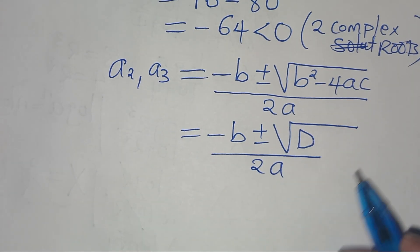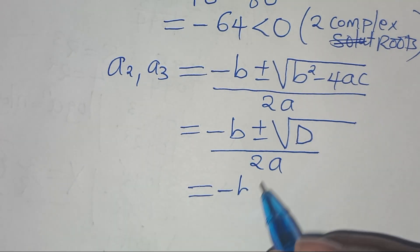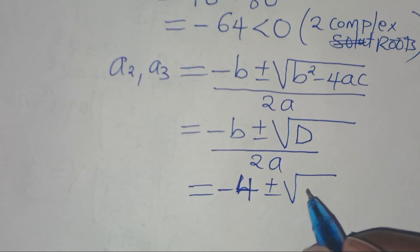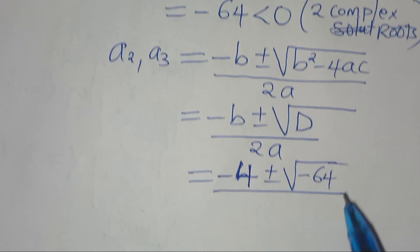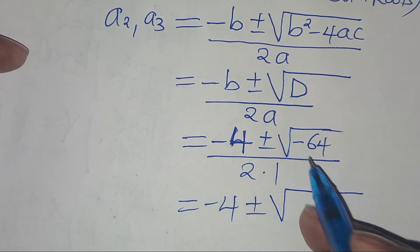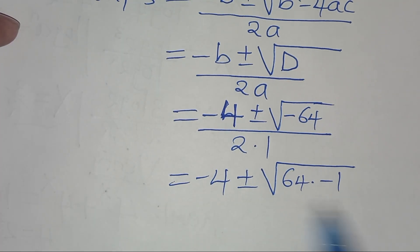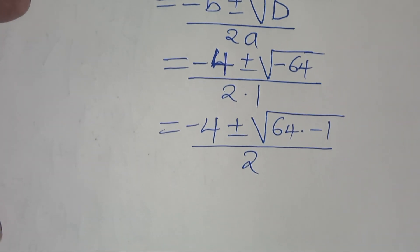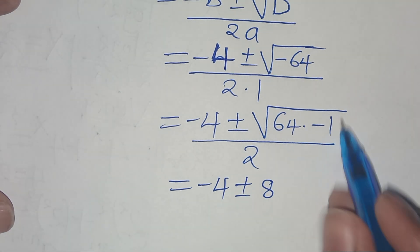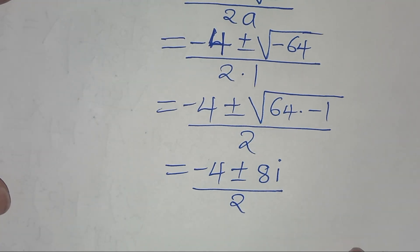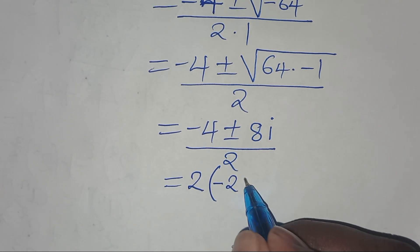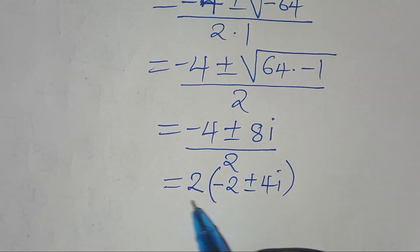Let's substitute the values of a, b, and c. We have minus b, where b is 4, so this is minus 4, plus or minus the square root of the discriminant, which is minus 64, divided by 2 times 1. We can express the square root of minus 64 as the square root of 64 times minus 1: the square root of 64 is 8, and the square root of minus 1 is i. In the numerator, 2 is common, so we factor out 2 to get minus 2 plus or minus 4i, everything divided by 2.